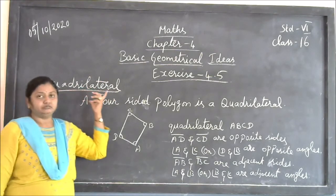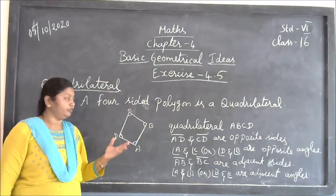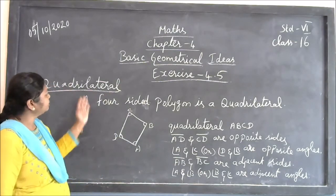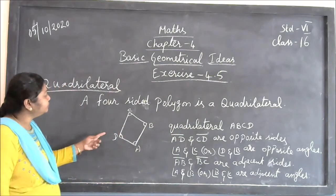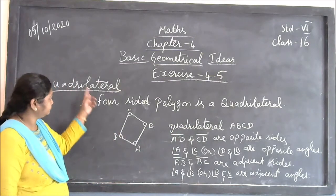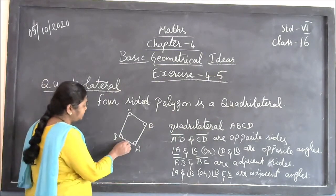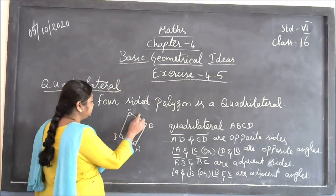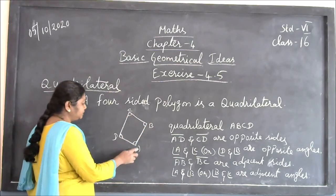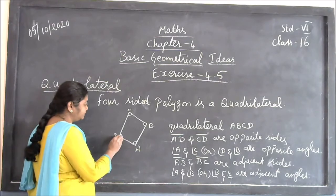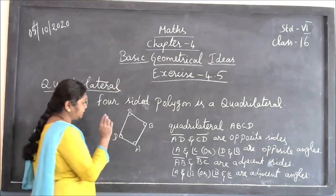What is a quadrilateral? A triangle has 3 sides; a quadrilateral has 4 sides. See this figure of the quadrilateral — 1 side, 2, 3, 4 sides. For all of these, I have given the names A, B, C, D.